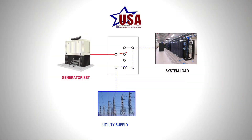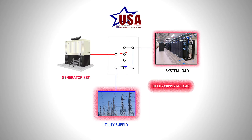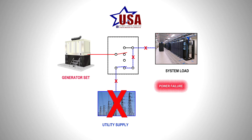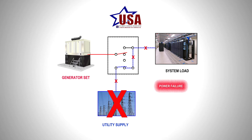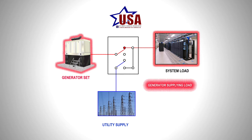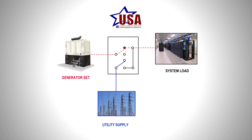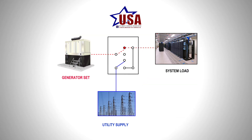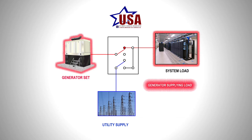As this animation shows, utility power normally flows through the ATS contactor that connects the utility to the load. In a power failure, the utility contactor is de-energized. The control panel senses utility failure and signals the generator to start. When the generator has reached full voltage, the generator contactor is energized and closes the supply power to the load.